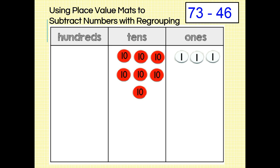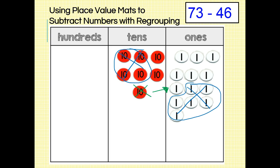No, we don't. We have three ones disks and we need to subtract six of them, so we need to regroup one of our tens into 10 ones. Now we can subtract our subtrahend, so we'll cross out four tens and six ones. We have two tens and seven ones remaining, so 73 minus 46 equals 27.